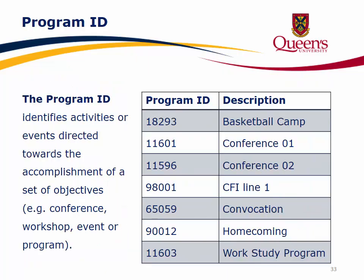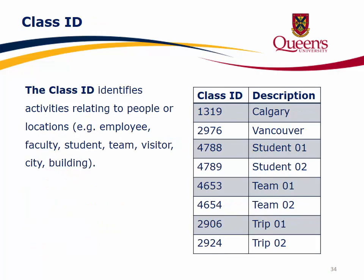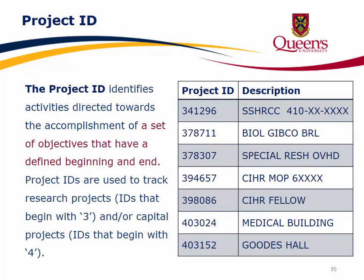The Program ID identifies activities or events directed towards the accomplishment of a set of objectives — for example, a conference, workshop, event, or program. The Class ID identifies activities related to people or locations — for example, employee, faculty, student, team, visitor, city, or a building. The Project ID identifies activities directed towards the accomplishment of a set of objectives with a defined beginning and end. Project IDs are used to track research projects (IDs beginning with 3) and capital projects (IDs beginning with 4).